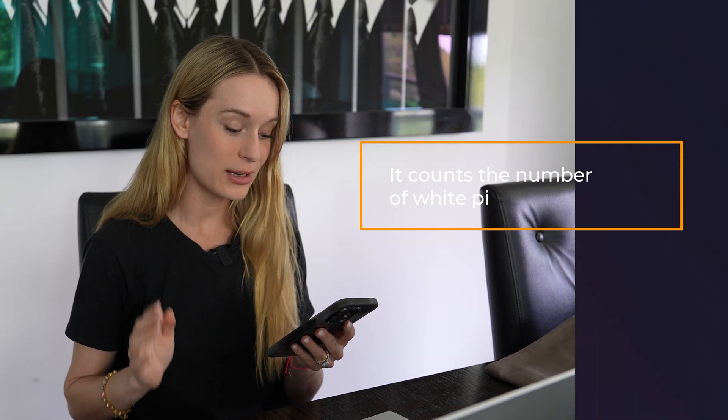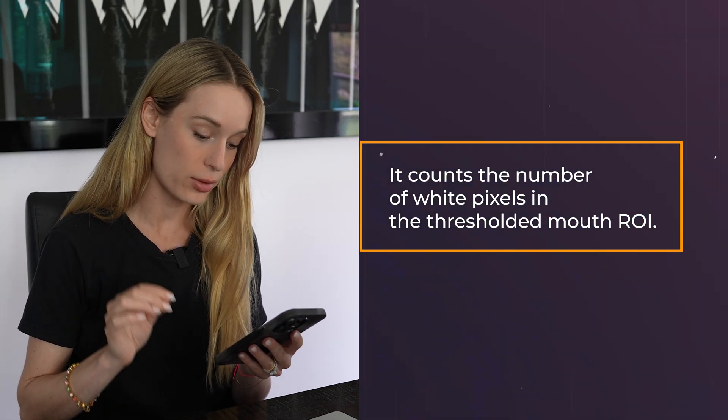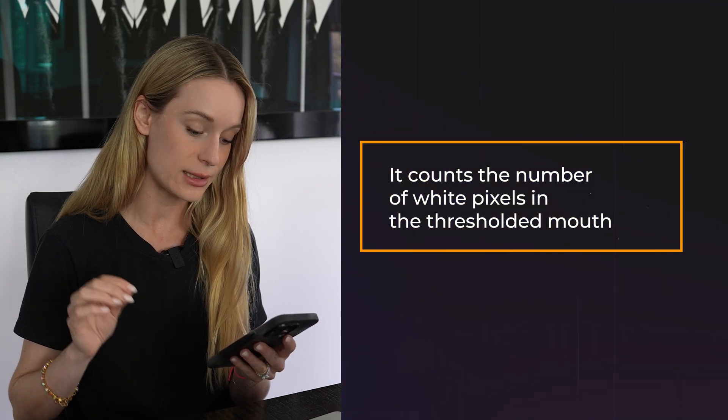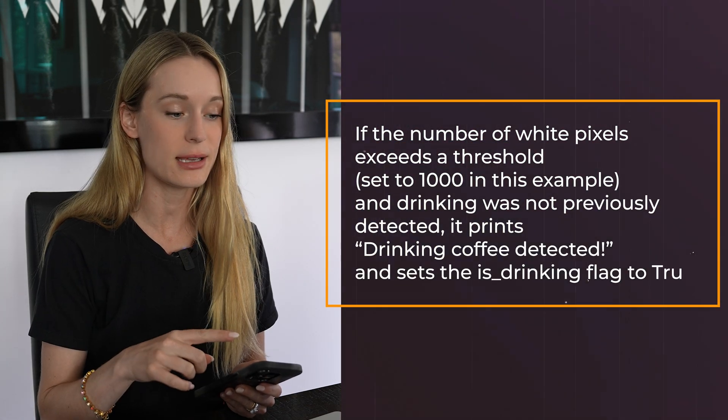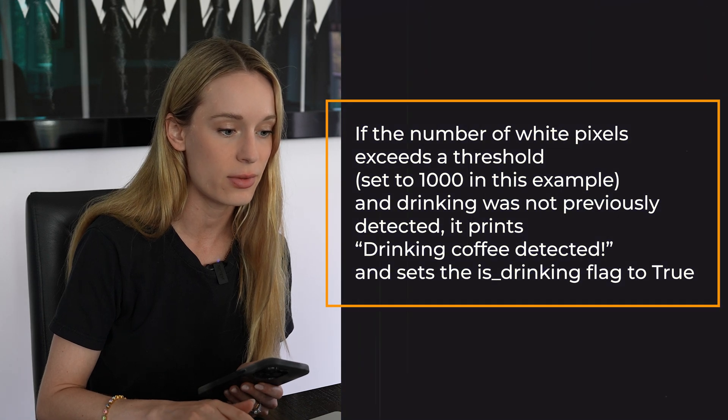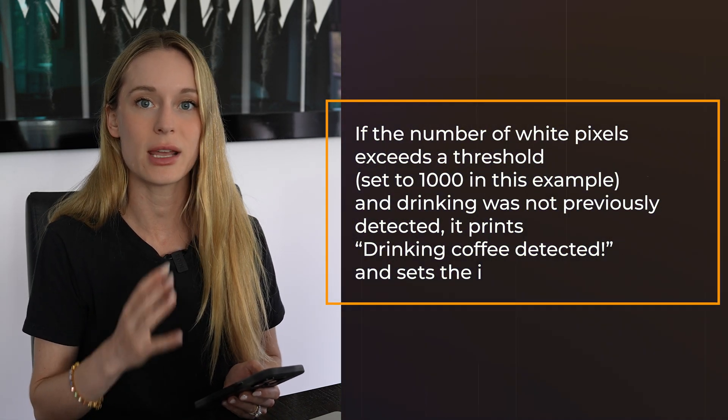As a side note, this is where it got a little tricky for me — everyone opens their mouth differently when they drink coffee. Then it will count the number of white pixels in the thresholded mouth ROI. If the number of white pixels exceeds the threshold — in this example I started with it set to 5,000, and it wouldn't recognize me taking sips of coffee, so I moved it up to 10,000, which I'll share in a second.